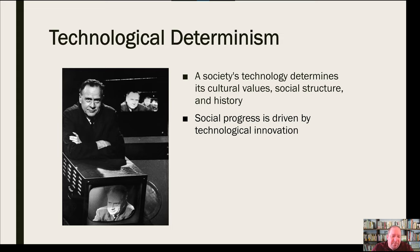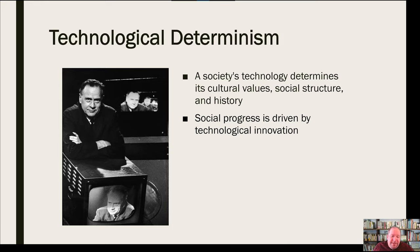To put it in a more specific context: recently we've seen the impact that these technologies have on things like white supremacist groups, who are much more able to organize and coordinate from a distance without having to gather until they want to. Social media and the internet have offered all kinds of advantages to groups like that, impacting social progress in a variety of different ways — some good, some bad. So social progress is driven by technological innovation.